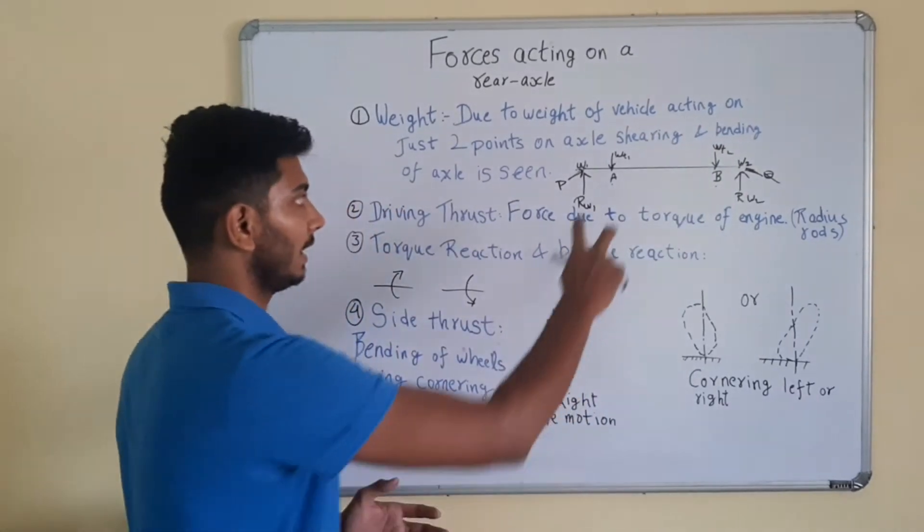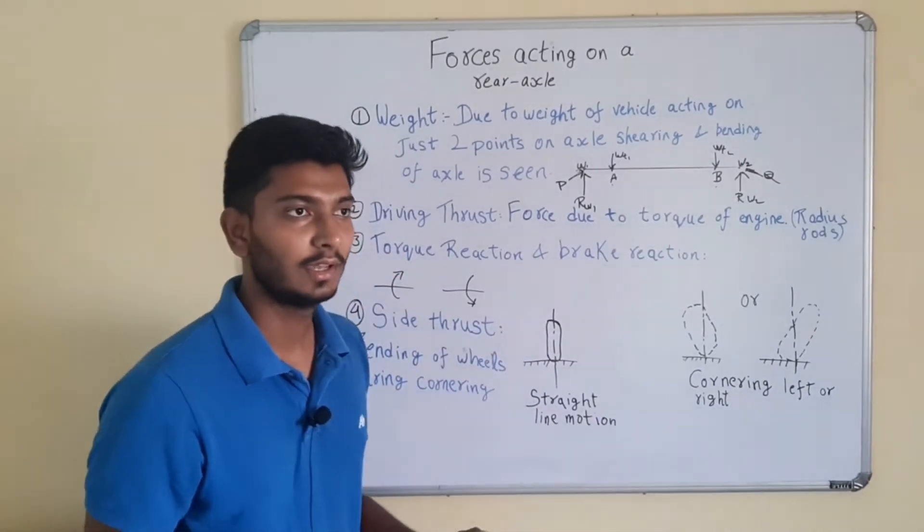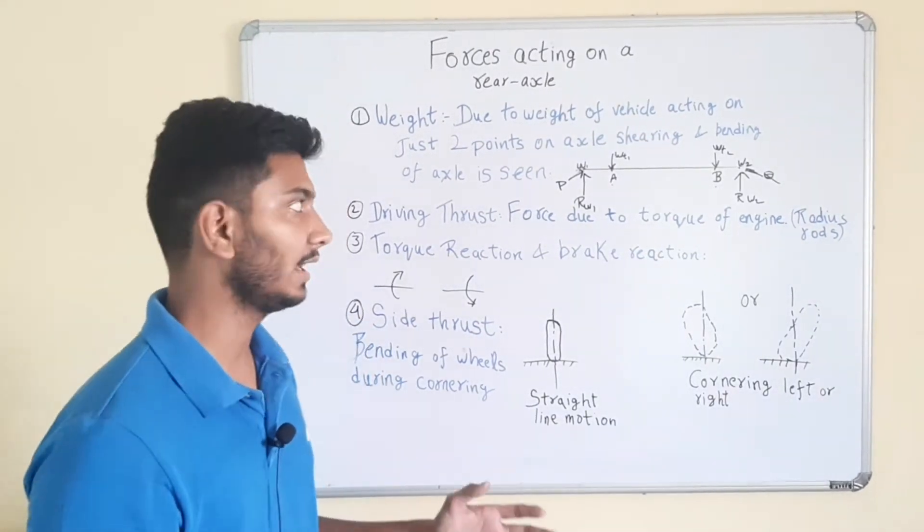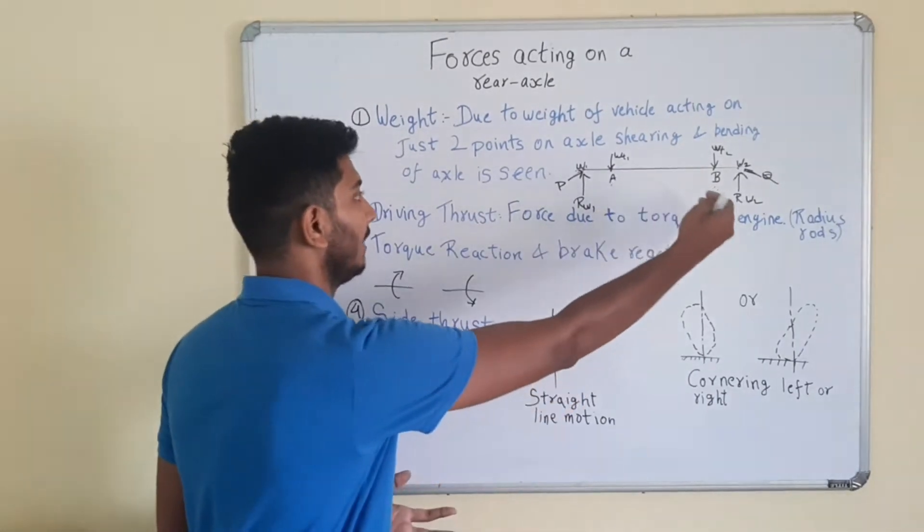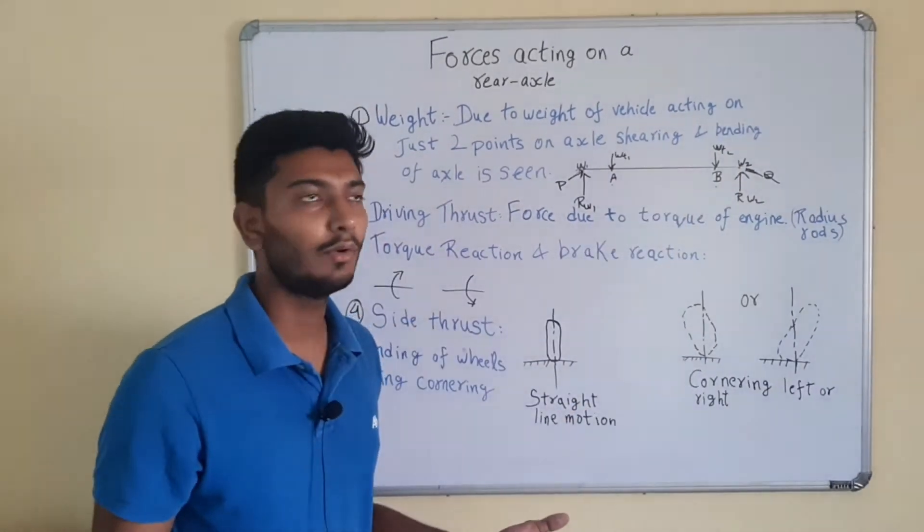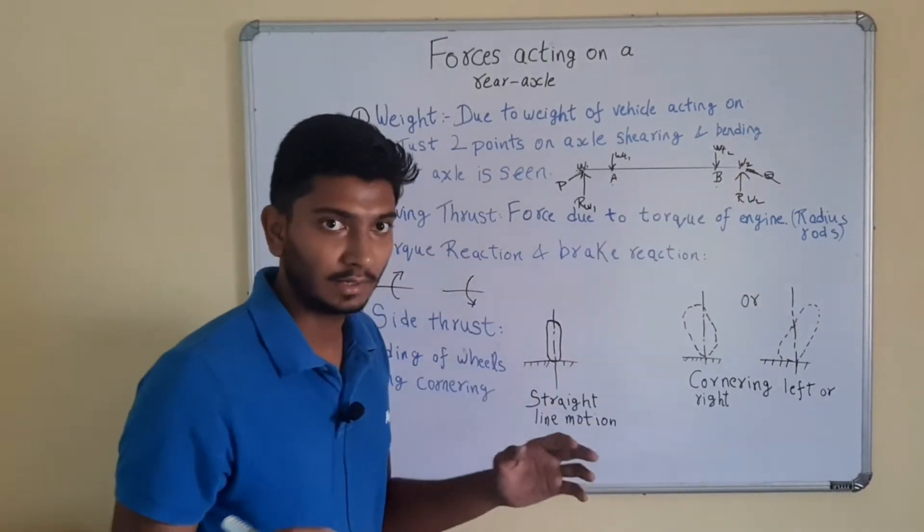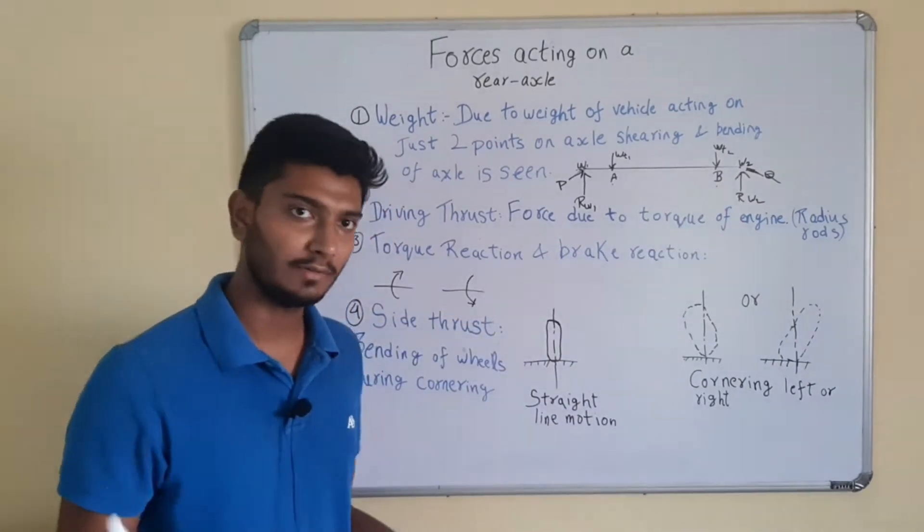We cannot say that these two forces will always be equal because if we take an example that if there are three persons sitting in a vehicle then the person sitting in the back might either be at the left hand or the right hand. We don't know it. So this WT1 and WT2 can or cannot be equal and this RW1 and RW2 may or may not be equal.